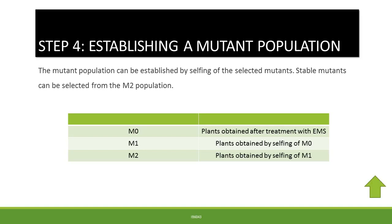Once a mutant population has been established, the subsequent populations M1 and M2 are arrived at by self-fertilization. For instance, upon exposure of a tomato plant to a chemical mutagen, the first germinated seedlings are designated as M0, and subsequent generations derived by selfing are designated as M1 and M2, respectively. One should take into account that mutations may not be retained over subsequent generations, and eventually the plant will revert to its wild type.